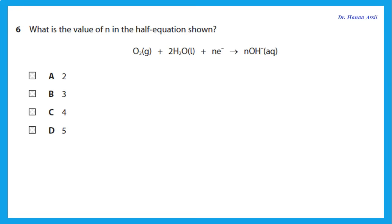What is the value of N in the half equation? We are basically balancing the equation. O2 has two oxygens, and 2H2O has two oxygens — so before the arrow I have a total of four oxygens, and I need four oxygens after the arrow. So after the arrow I must have four H2O. This gives four oxygens and four hydrogens on both sides. Now we balance the charges: if I have four negative charges after the arrow, I need four electrons before the arrow.